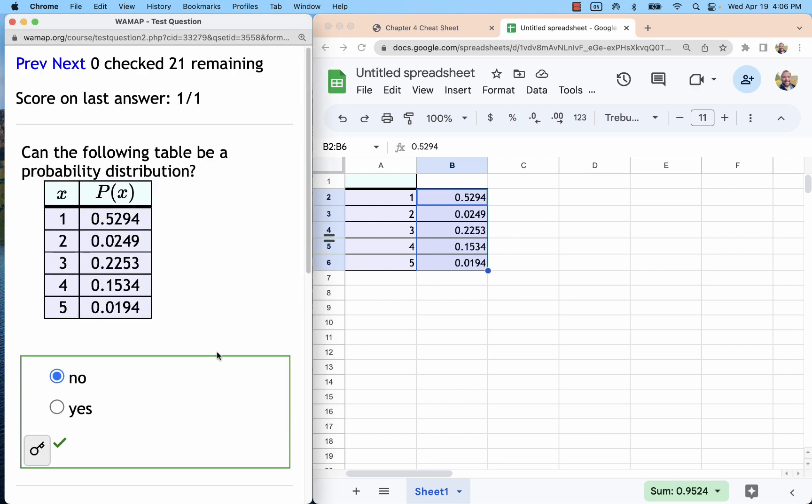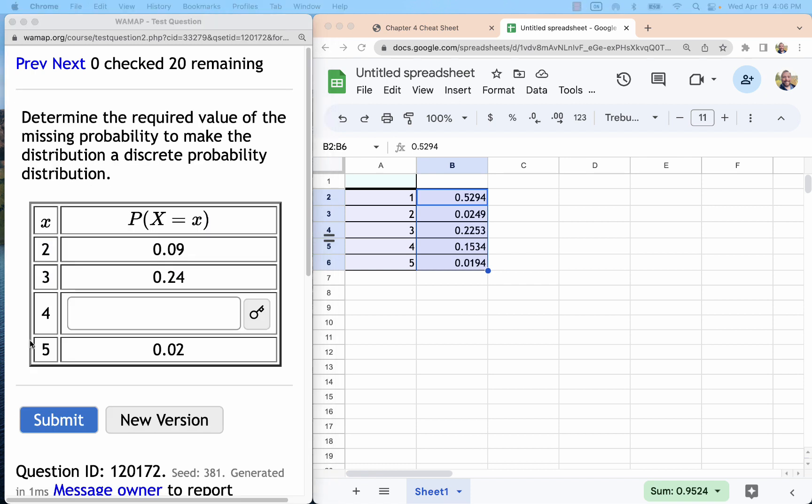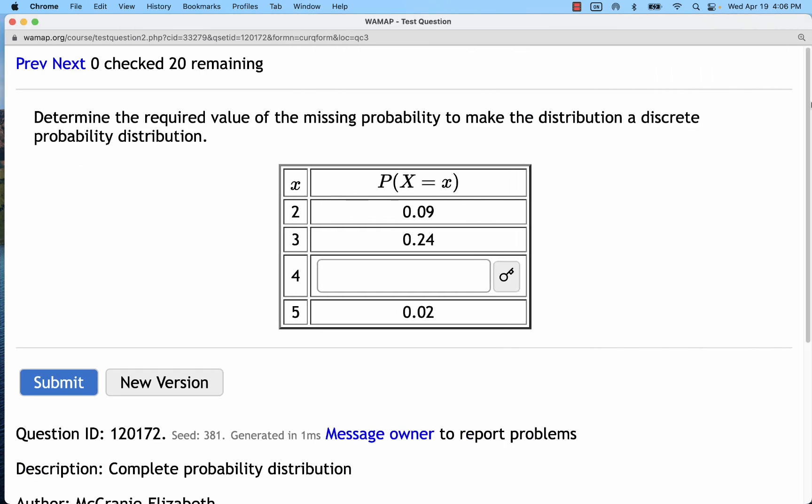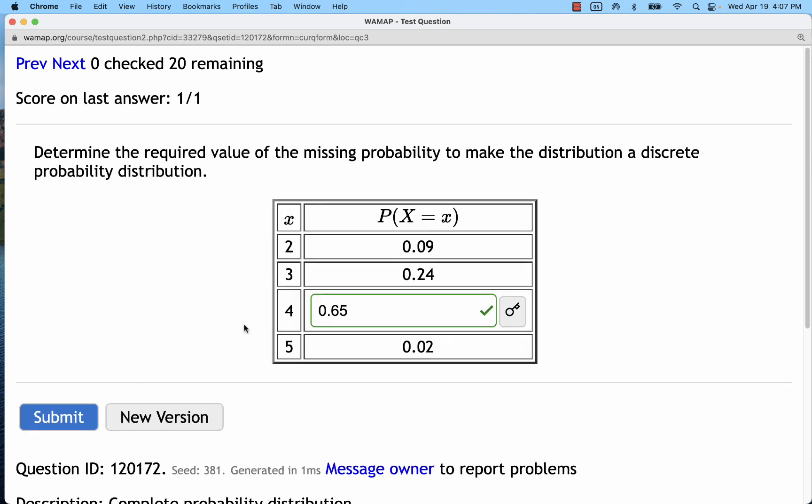So that could not represent a probability distribution. Now if we need to fill in missing values we're going to use that same concept. We're going to use the fact that this is supposed to add up to one. And so if I take one minus 0.09 minus 0.24 minus 0.02 I can get the remaining probability. In this case what I have here adds up to 0.35, so the remaining one minus 0.35 should be 0.65 just to make that calculation a little bit easier.